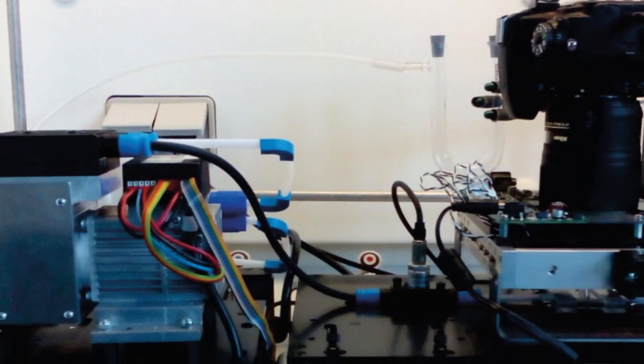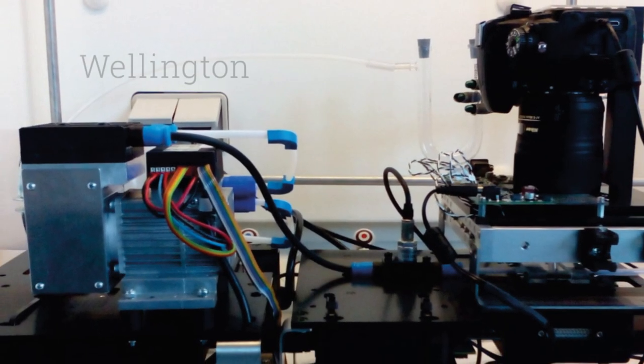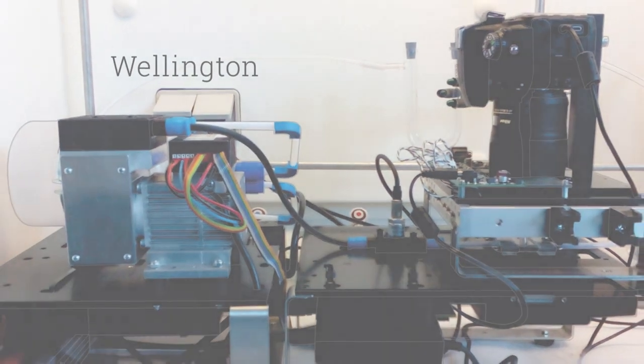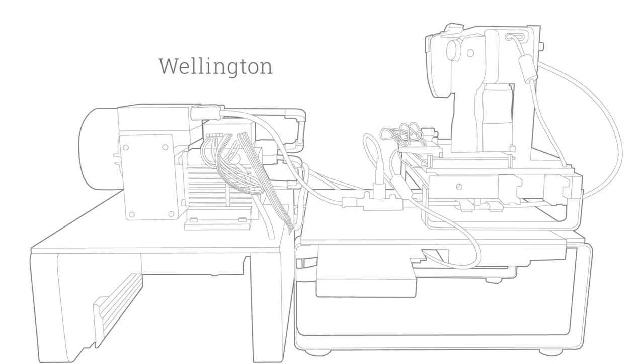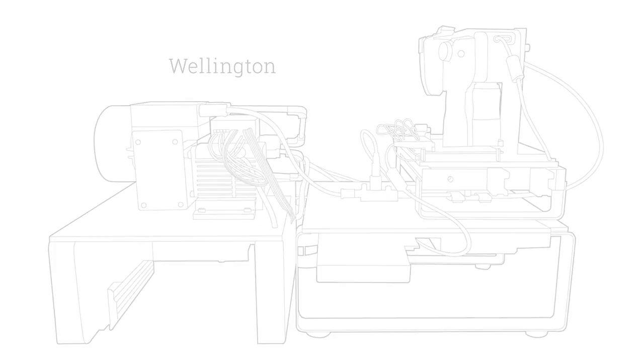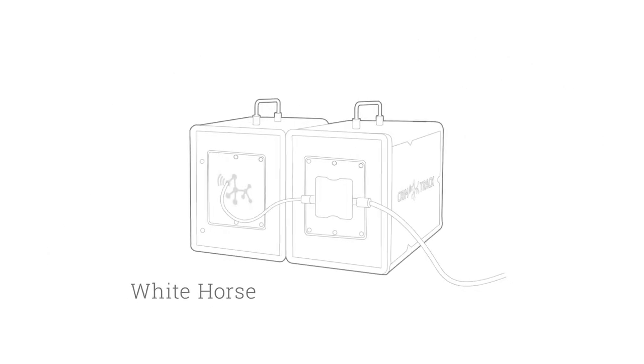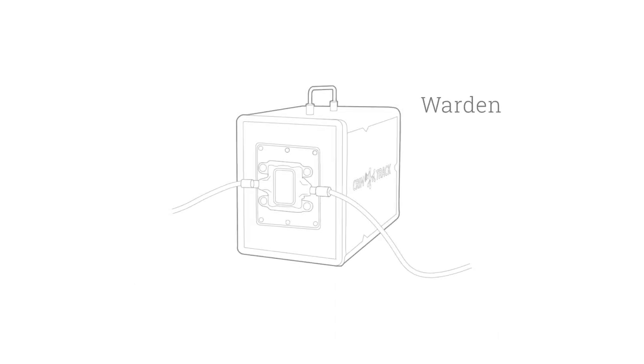The demonstration of the ability of the first prototype, known as Wellington, to detect and identify named substances, provided the foundation to develop two further prototypes. Cranfield arranged and hosted trials with both, White Horse in 2015 and Warden in 2017.